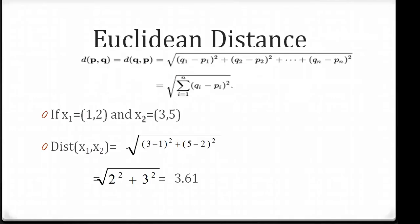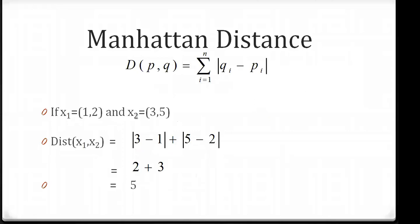For Euclidean distance, the formula involves squaring each difference: summation of (Q - P)². With the same two points x1 = (1, 2) and x2 = (3, 5), we compute (3-1)² + (5-2)², which gives 2² + 3² = 4 + 9, and the square root gives 3.61. So for the same points, Euclidean distance is 3.61 whereas Manhattan distance is 5 — the difference is that you square the deviations and then take the square root.